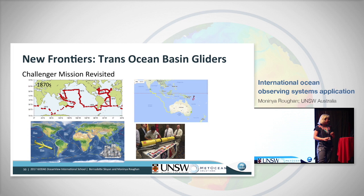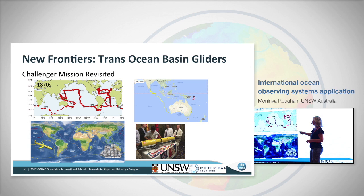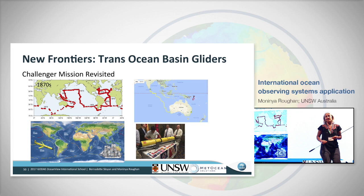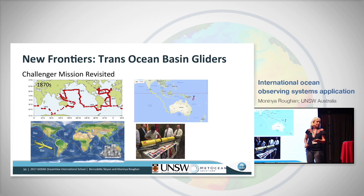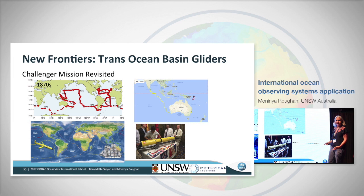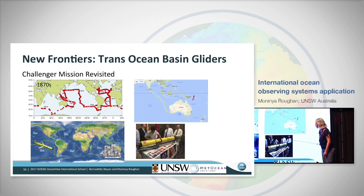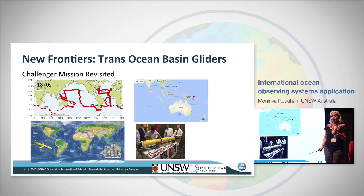Another new frontier is trans-ocean basin gliders. Recalling the Challenger mission from the 1870s, colleagues at Rutgers decided to recreate it with a glider. Just yesterday, the Australian and Rutgers teams retrieved a glider in Sri Lanka — they deployed it in Perth and about four to five months later it arrived in Sri Lanka. They had to turn the instruments off halfway through to preserve battery, but the first half of the mission they were diving to 1,000 metres and collecting remarkable data.